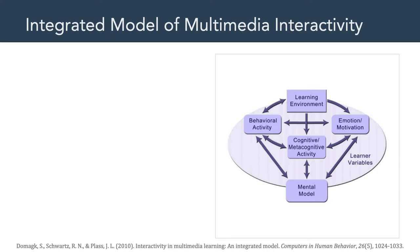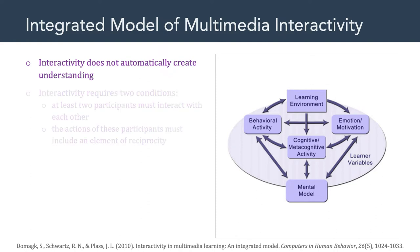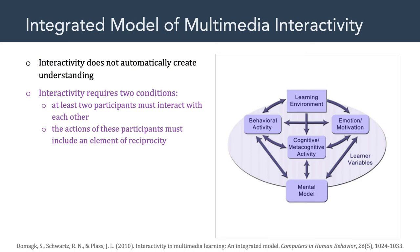This is a very theoretical model. As some of you pointed out in your reflections, you felt it was a little complex. According to these authors, interactivity does not automatically create understanding—it can be good, but it's not necessarily automatically a good thing when it comes to learning. In the article, we learned that interactivity requires two conditions: there must be at least two participants interacting. In our examples, one participant is the learner and the other is the learning environment—the multimedia system.